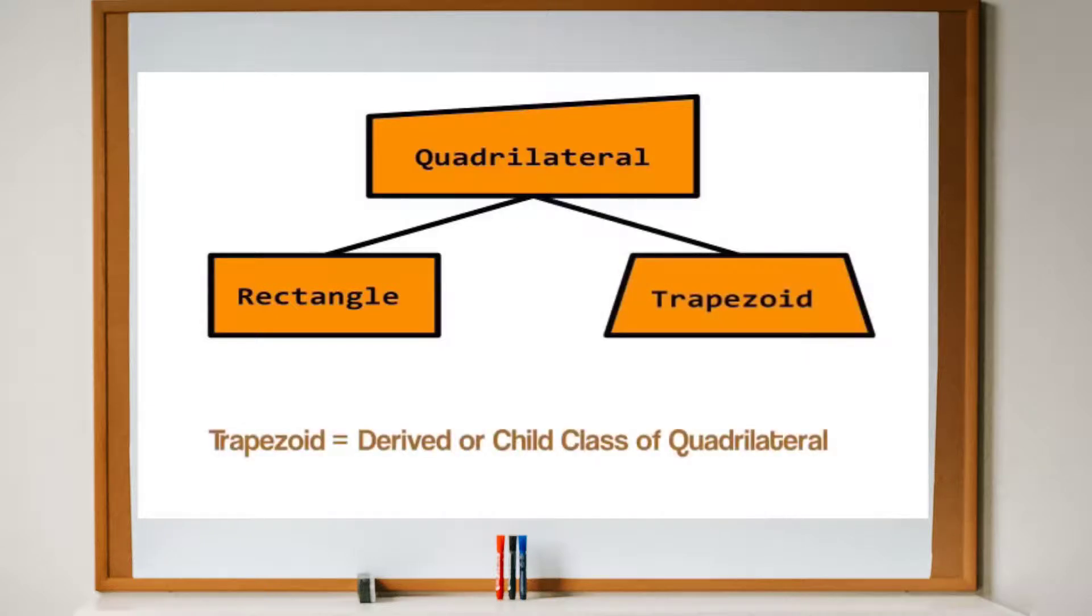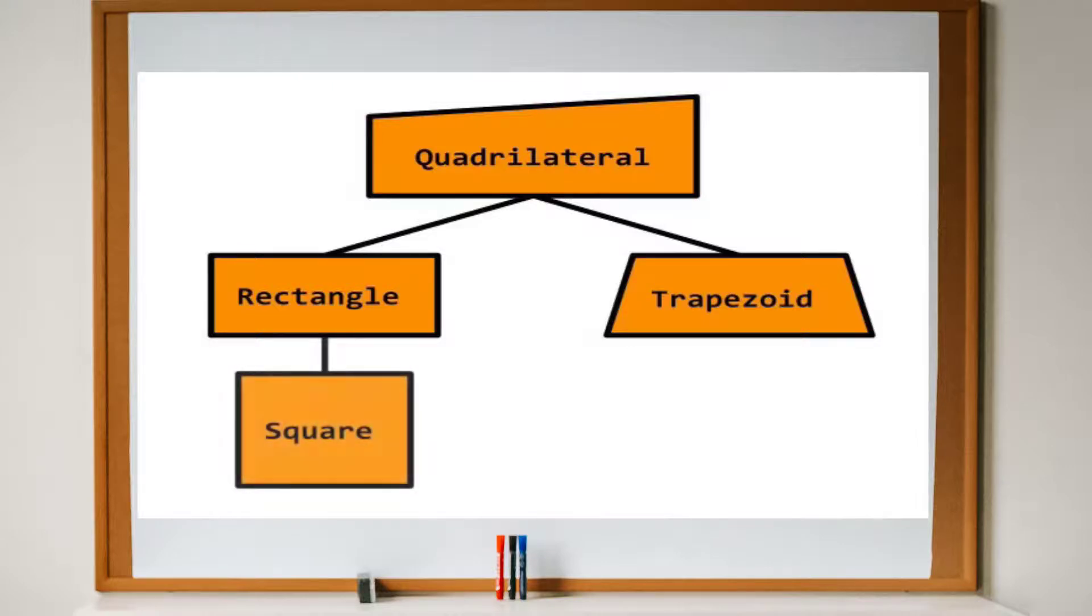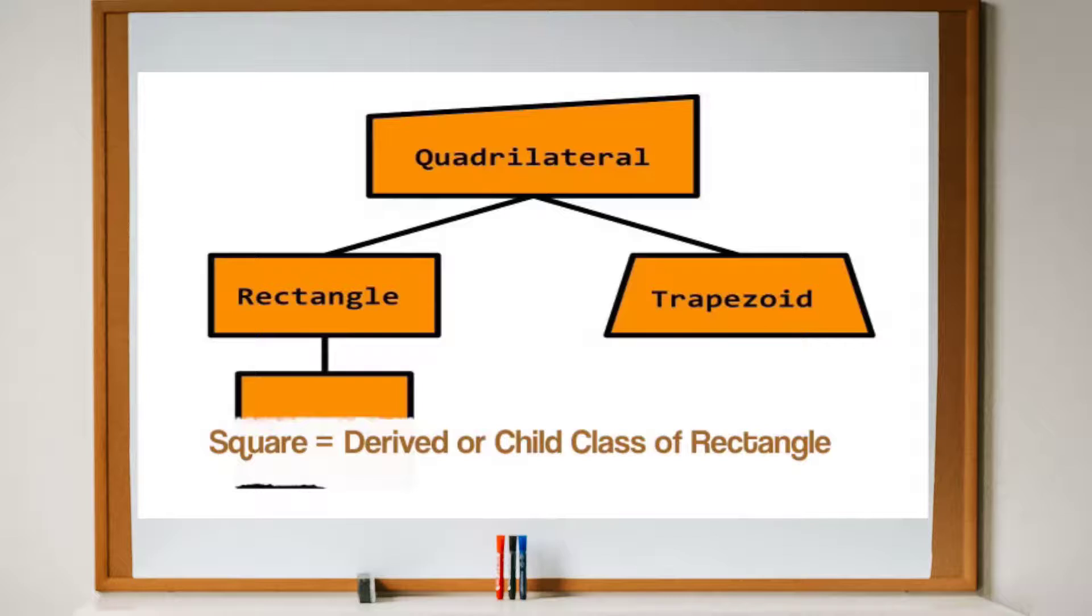Let's make another child class of quadrilateral called trapezoid. Like rectangle, trapezoid has the attributes of quadrilateral. Trapezoid inherits the traits of quadrilateral, plus the trait of having a parallel top and bottom. For fun, let's create a class called square. Square inherits all the attributes of rectangle and gains the requirement of having side lengths all be the same length.